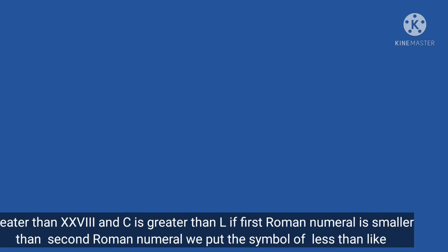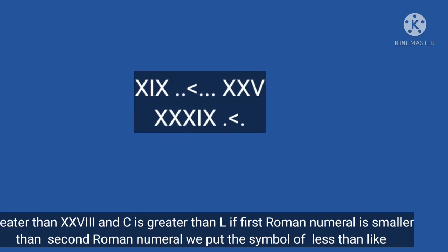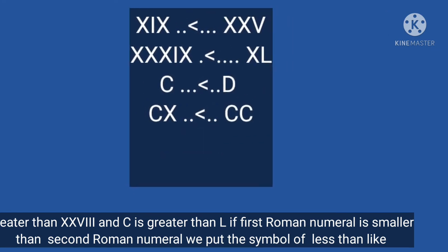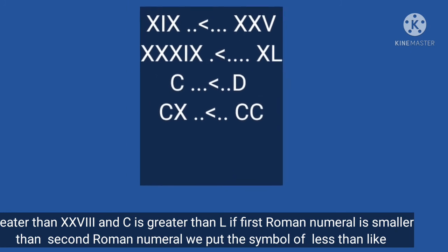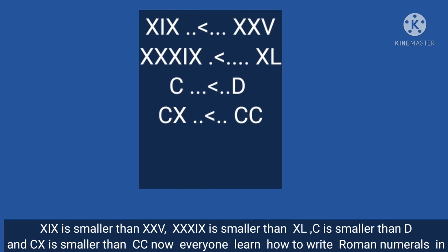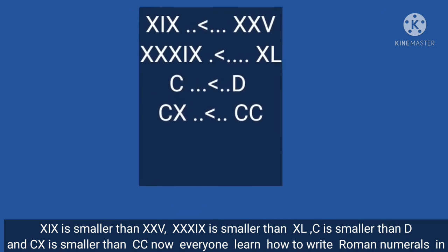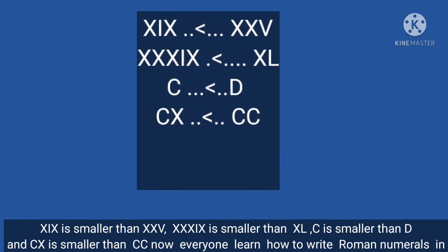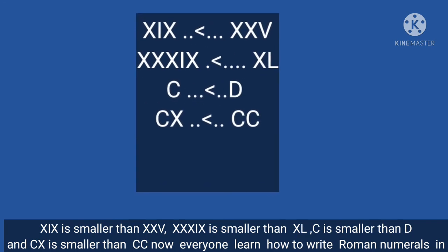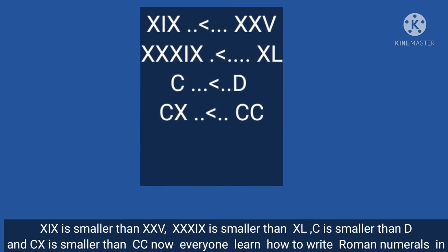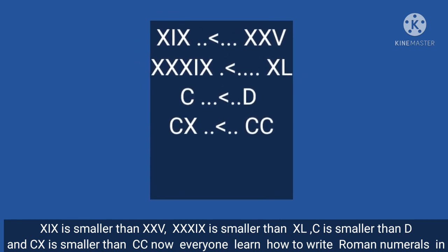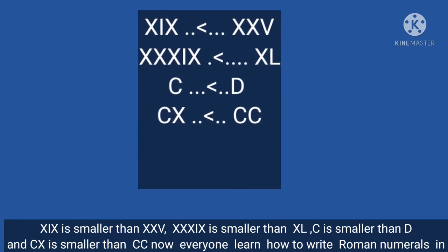If the first Roman numeral is smaller than the second, we put the less than symbol. For example: XXIX means 29 is less than XXXV; XXXIX means 39 is smaller than XL means 40; C is smaller than D — C means 100 and D means 500, so C is smaller than D; and CX is smaller than CC — 110 is smaller than 200.